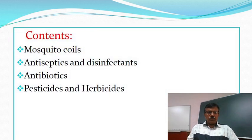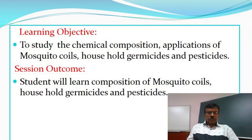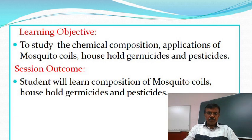Contents: Mosquito Coils, Antiseptics and Disinfectants, Antibiotics, Pesticides and Herbicides. Learning objective: to study the chemical composition and applications of mosquito coils, household germicides and pesticides. Session Outcome: Students will learn the composition of mosquito coils, household germicides and pesticides.